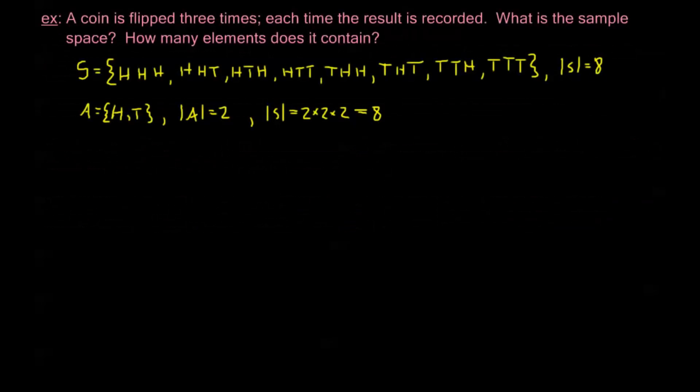So recall in the last video we had this example, a coin is flipped three times and each time the result is recorded. So we found what the sample space was, right? It's this HHH, HHT, etc., this is our sample space. Now this sample space can also be shown using a tree diagram and we're going to do that here.